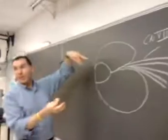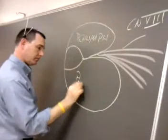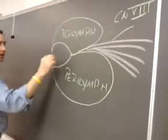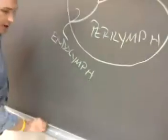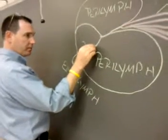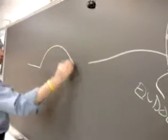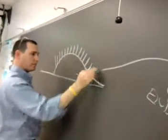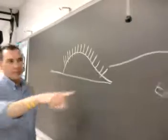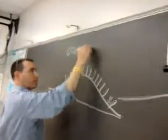Inside that little area, in these three little chambers: the two outside ones have perilymph and the inner one has endolymph. Right at the base of this there's a little structure that kind of looks like a little bump. That little blowup inside the chamber where the endolymph is has a name - it's referred to as the organ of Corti.